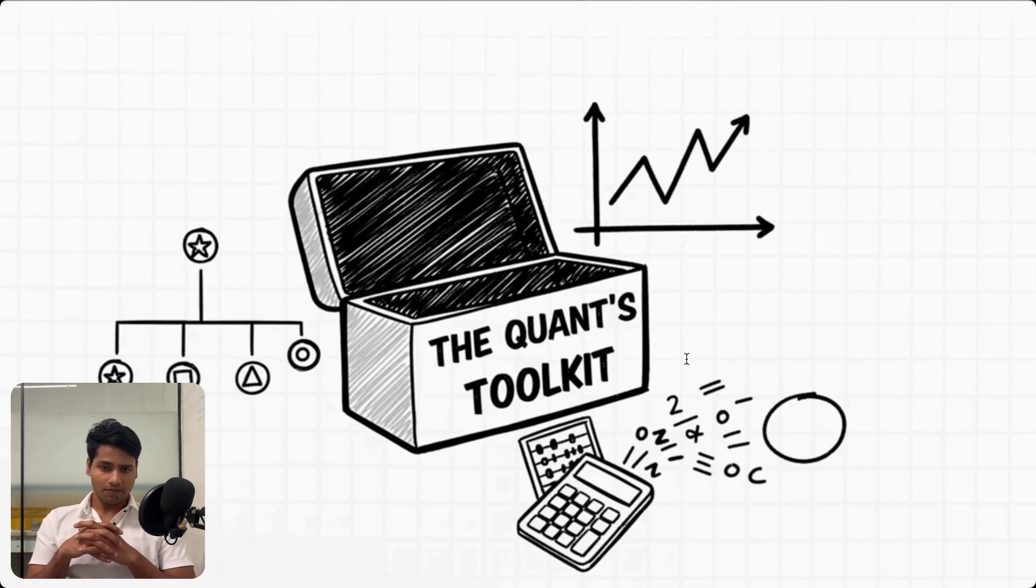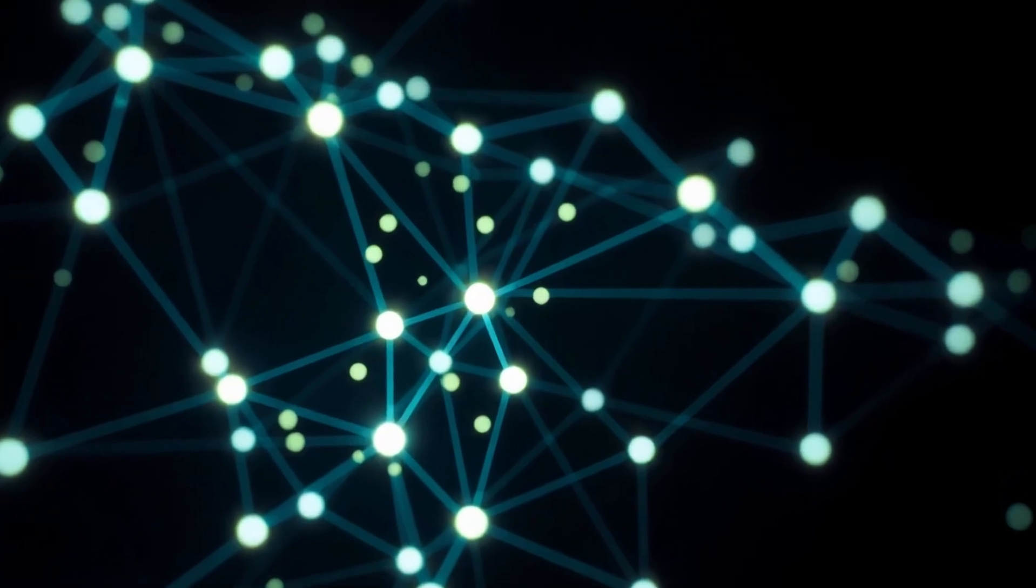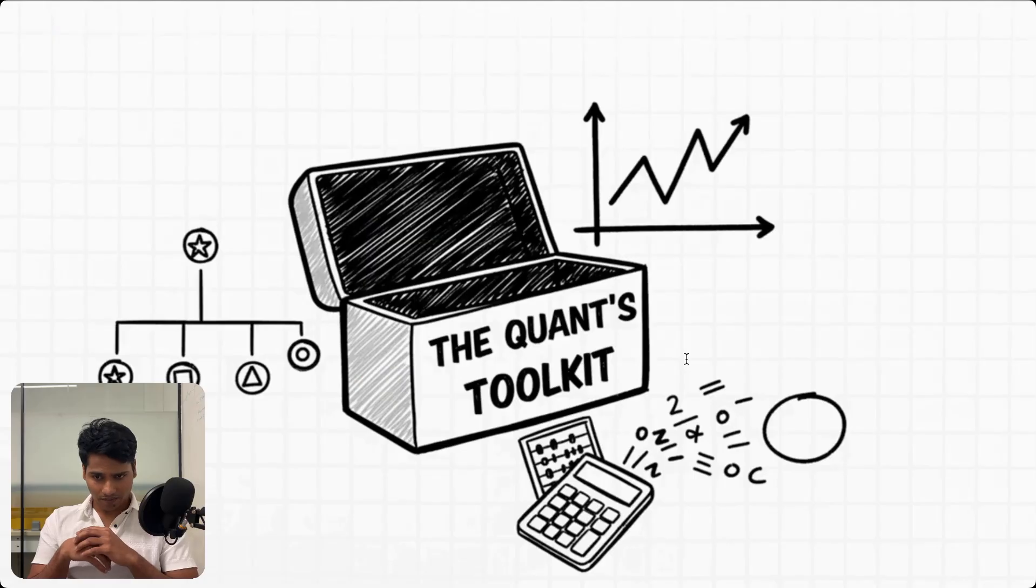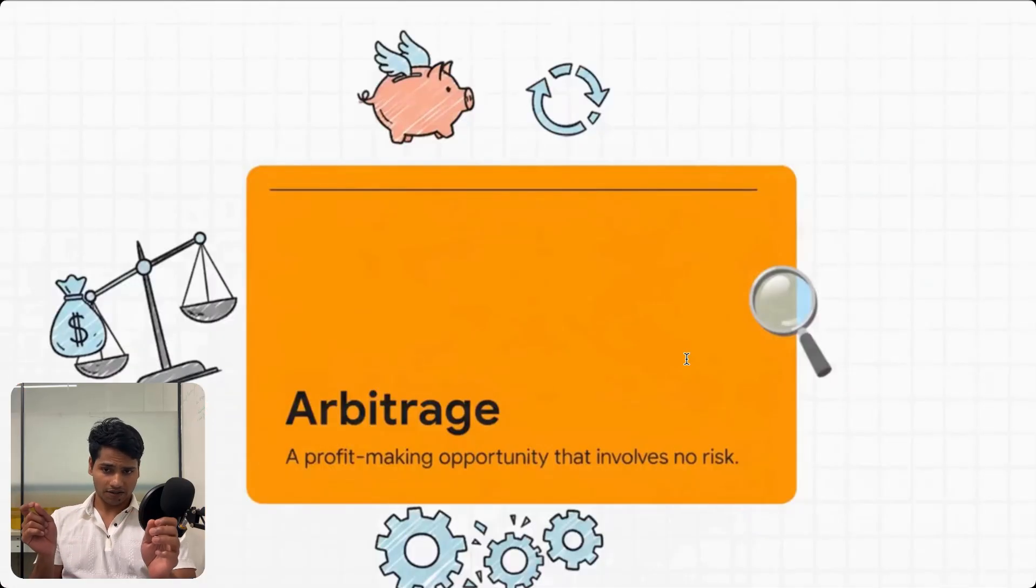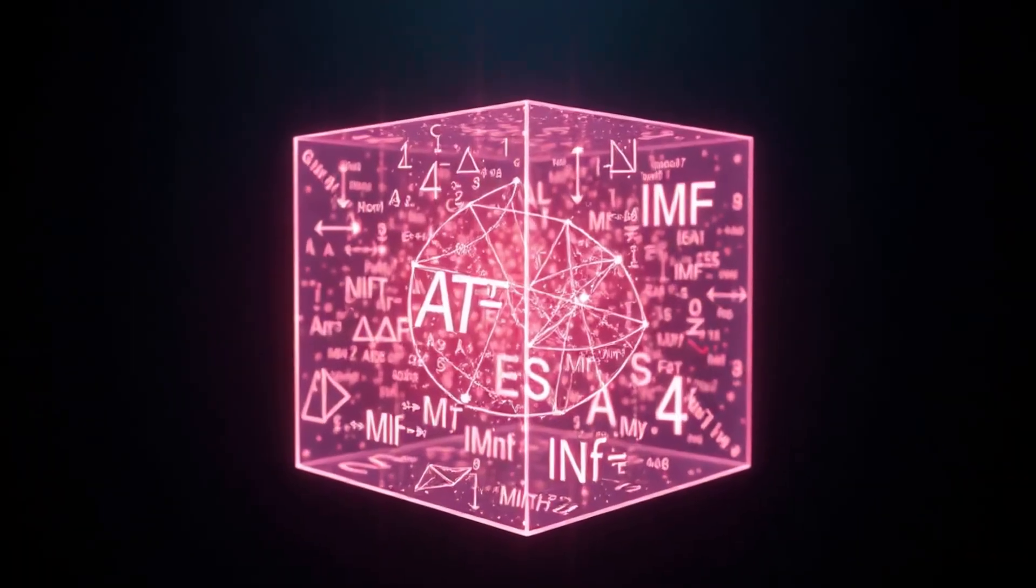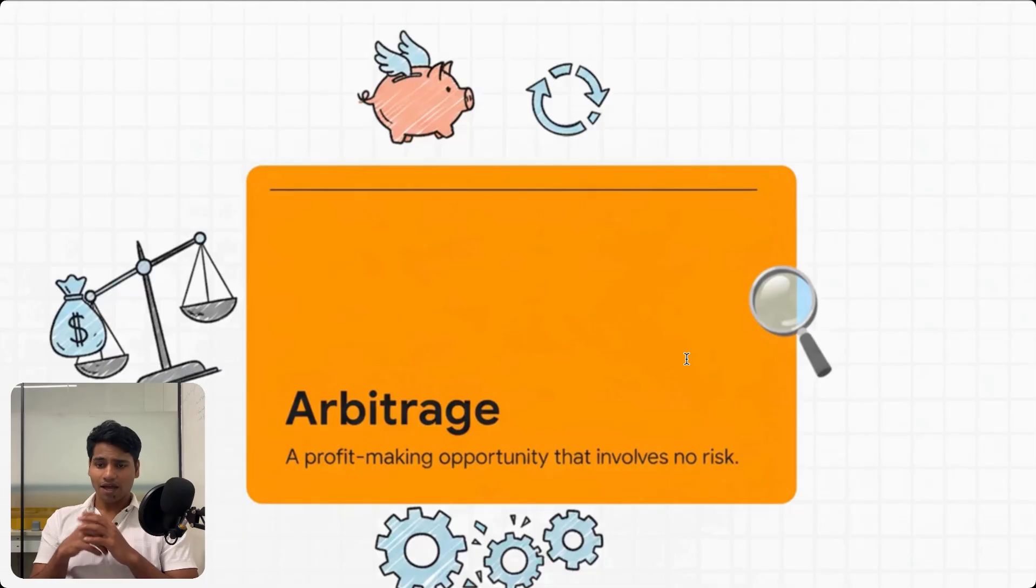And they don't go into this fight empty-handed. They've got this seriously heavy-duty toolkit. We're talking probability theory to map out all the things that could happen, differential equations to model how things change over time, and incredibly complex numerical methods to crunch insane amounts of data. Armed with this stuff, they literally try to build a perfect logical universe for finance.